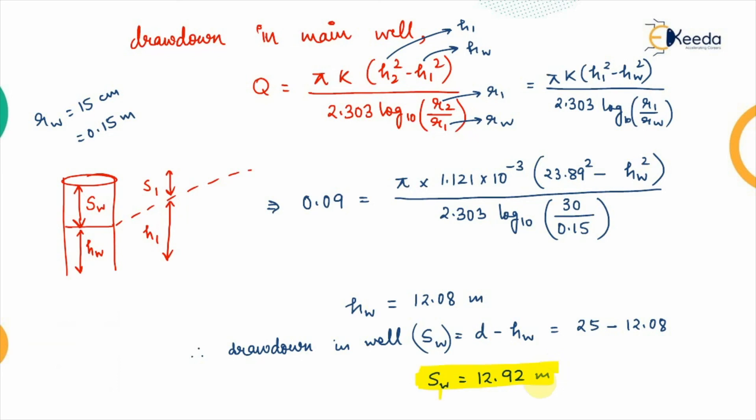Corresponding to this drawdown we get the radius of influence and the zone of influence for the well. That completes all types of problems based on the chapter of groundwater. In the next video we will start the new chapter based on reservoir planning. Thank you.